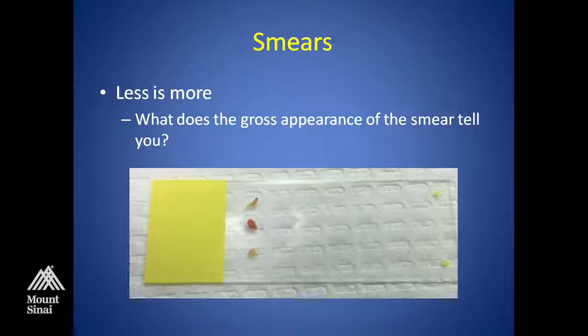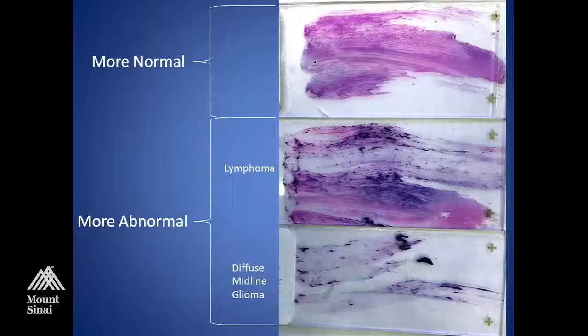When you get the specimen, it's important to evaluate what kind of tissue you actually are getting. Is it firm tissue? Is it soft brain tissue? Ideally, if it's tissue that is heterogeneous as far as its discoloration — if there's white matter and cortex — I'll take pinhead-sized pieces of the tissue from various regions, put them on the end of the slide as shown here, and make a smear.